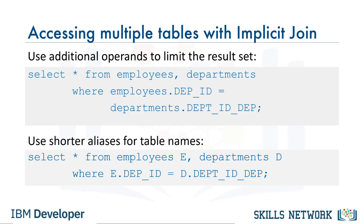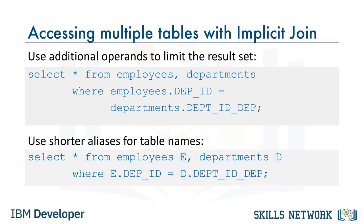Since the table names can sometimes be long, we can use shorter aliases for table names as shown here: SELECT * FROM employees E, departments D WHERE E.department_ID = D.department_ID. Here we define the alias E for the employees table and D for the departments table, and then use these aliases in the WHERE clause.